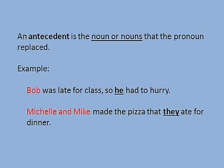An antecedent is the noun or nouns that the pronoun replaced in a sentence. Let's look back to our first two examples. Bob was late for class, so he had to hurry. We know that he is the pronoun in the sentence. Bob is the antecedent because he replaces the name Bob in the sentence.